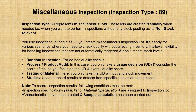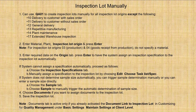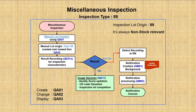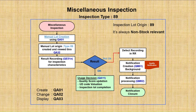All the master data must be properly created — whether it is the master inspection characteristics (MICs) which we want to test, or the sampling procedure should be there so that the sample size can be calculated. If it is a qualitative MIC, then we do need the codes and code groups or the selected sets. Once the lot is triggered, it will be in released status and we can do result recording and the usage decision. If we find any defect, we can create notifications.